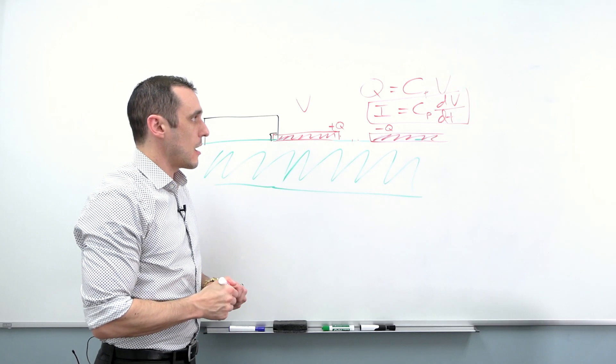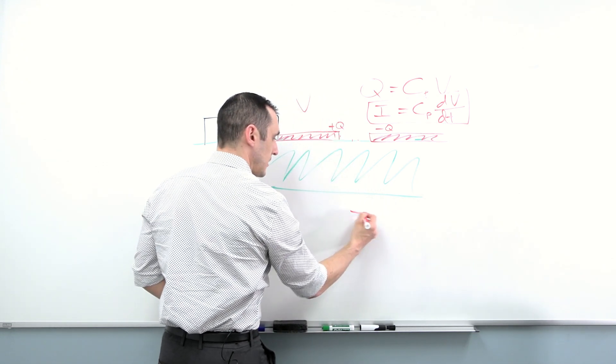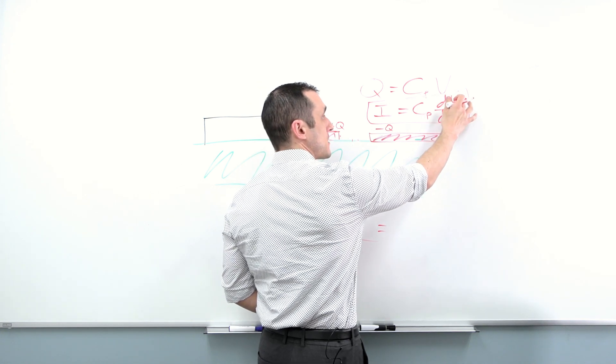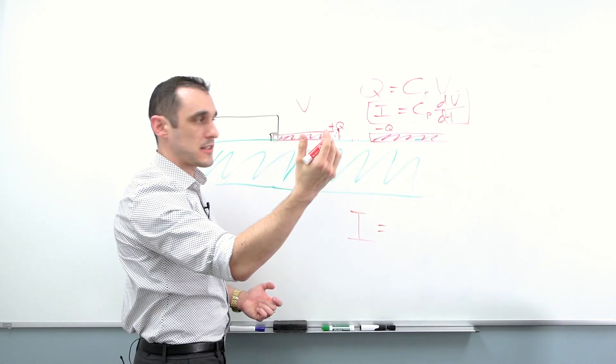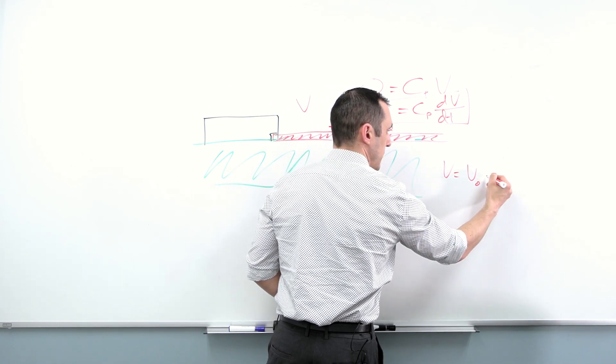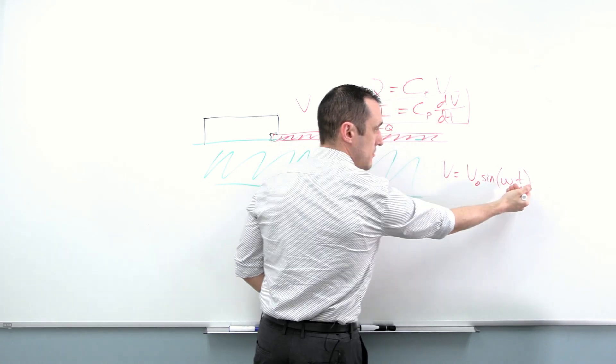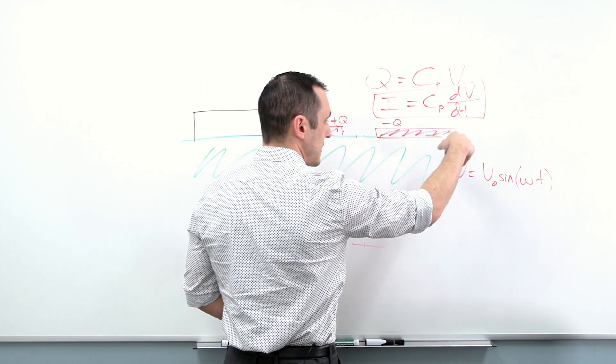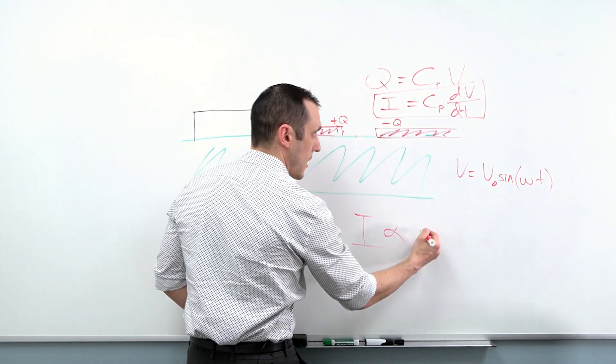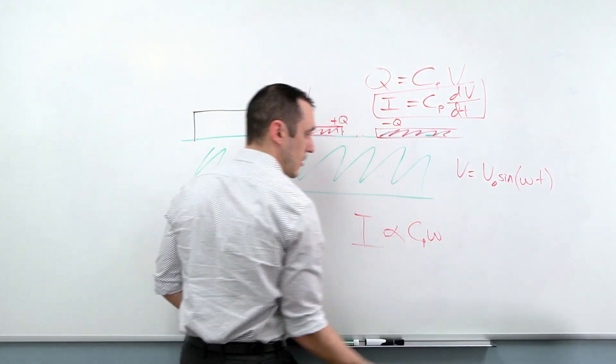The reason this becomes more prominent at higher frequencies is because let's say that I want to calculate what the current is. And I know that this voltage is, let's say it's just a harmonic signal. So let's just say that my voltage is just some amplitude times sine of some frequency times time. So if I take this derivative, I would essentially get something that is proportional to C sub P times omega.